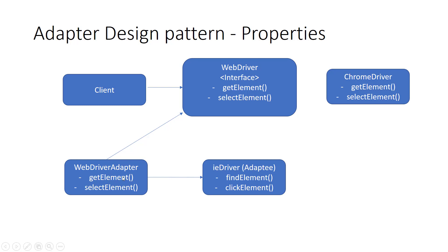So we put a WebDriver adapter. It adapts the IDriver — internally it calls get element, which maps to find element of IDriver. The different-interface object is called the adaptee — we are adapting these different objects and communicating from that interface to our main interface. The adapter adapts the adaptee through its methods.